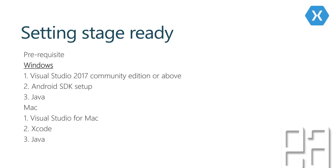That's the prerequisite for Windows. For Mac operating system, you need to download Visual Studio for Mac and you need to have Xcode as well as Java installed. For installing Visual Studio 2017 for Mac, I have already created some videos on our YouTube channel where you can search for 'installing Visual Studio 2017 for Mac in Execute Automation.' You'll get a link showing how to install Visual Studio for Mac on your Mac operating system.